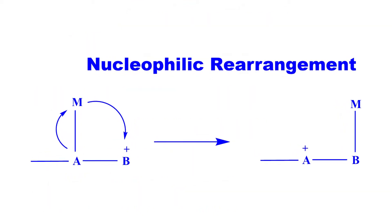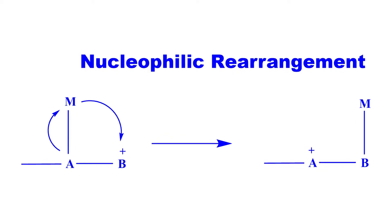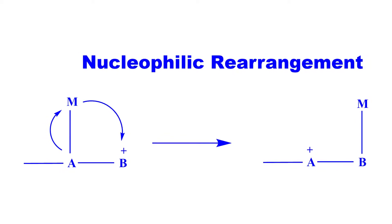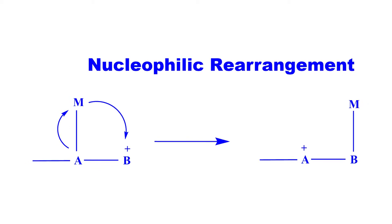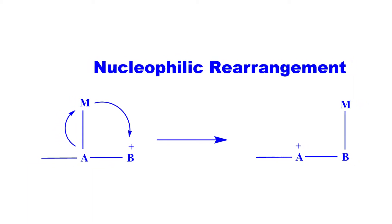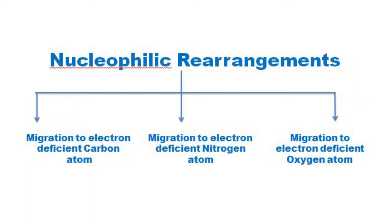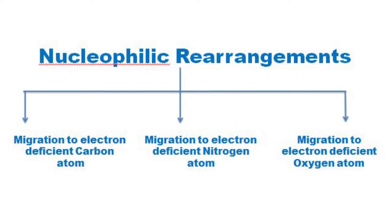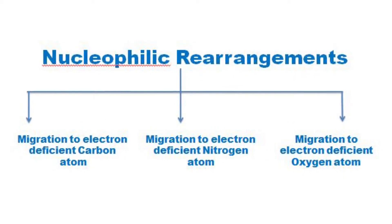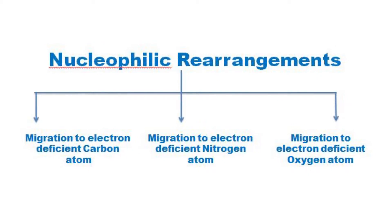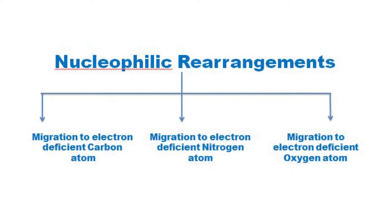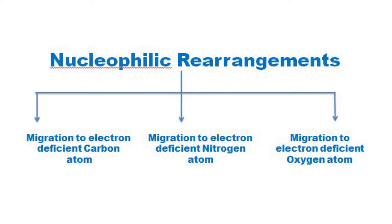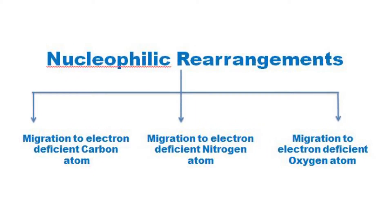Rearrangement reactions in which the migrating group migrates with its electron pair to electron-deficient atoms are called nucleophilic rearrangements. Nucleophilic rearrangements are of three types: migration to electron-deficient carbon atom, migration to electron-deficient nitrogen atom, and migration to electron-deficient oxygen atom.